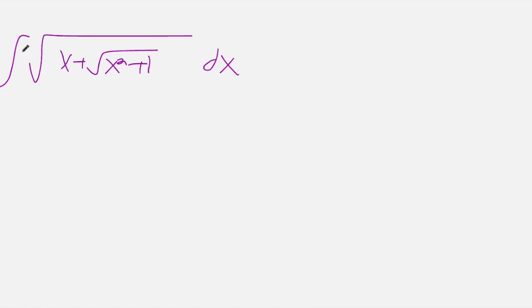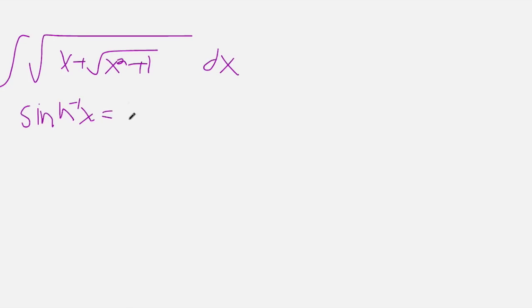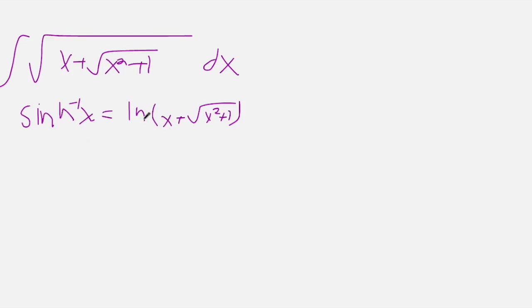And it is the integral of the square root of x plus the square root of x squared plus 1. First, I want to show you a little formula. The hyperbolic sine inverse of x is equal to the natural log of x plus the square root of x squared plus 1. So obviously, the contents of this integral and this formula are the same.